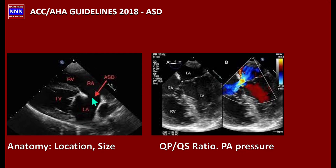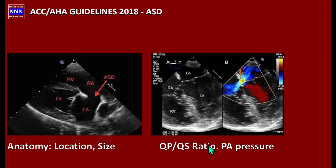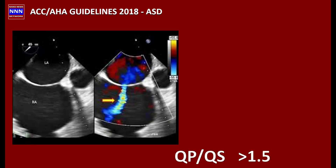We cannot rely on a single image because echo beam dropout can mimic a defect. Color flow Doppler shows the amount of shunting from the left to right side, and by measuring velocities we can calculate the Qp:Qs ratio. We can also measure pulmonary artery pressure using 2D echocardiography.